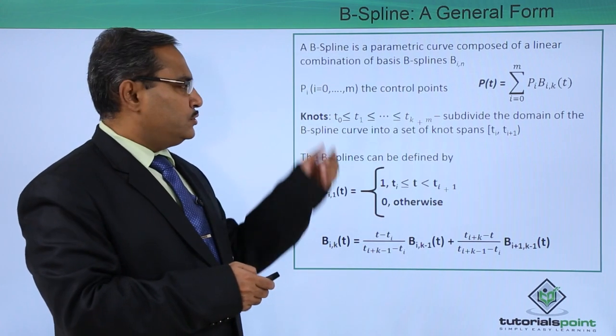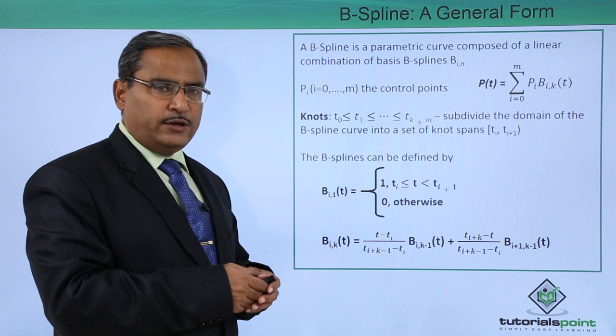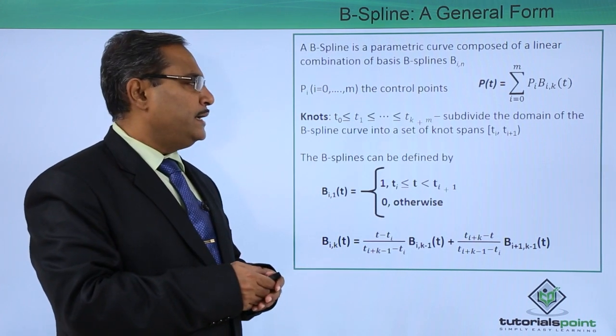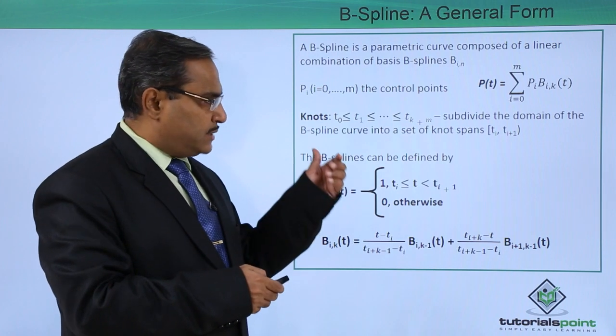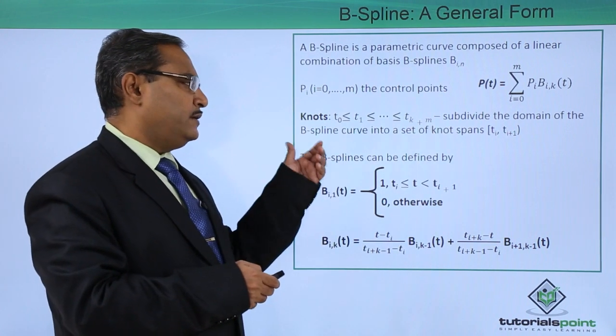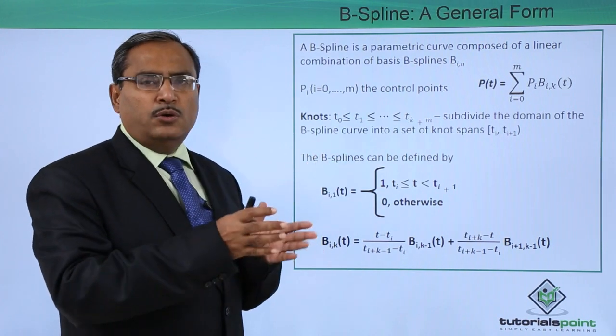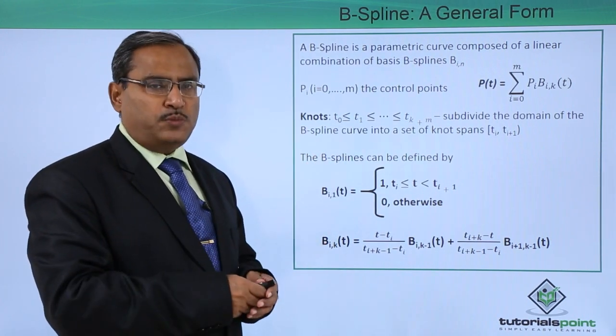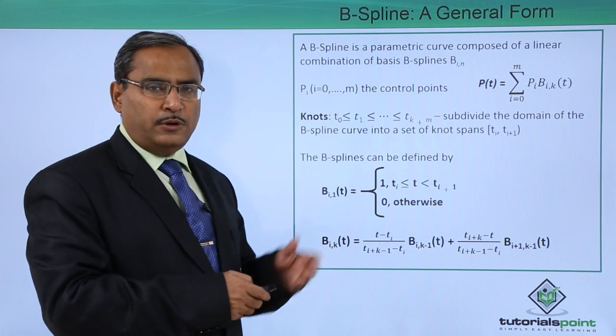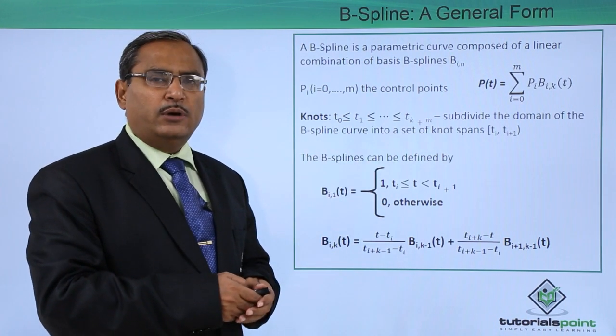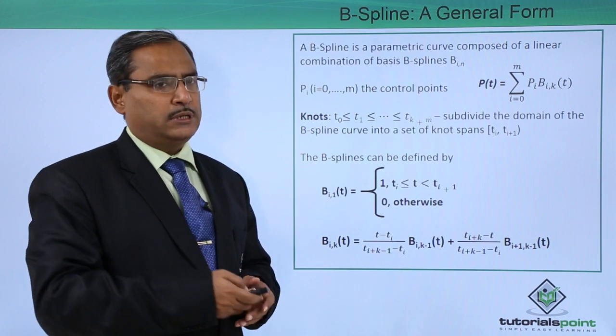Here we are having knots: T0 is less than or equal to T1 is less than or equal to dot dot dot, is less than or equal to TK plus m. These subdivide the domain of the B-spline curve into a set of knot spans ranging from TI to TI plus 1. If you increase these knots, you are going for more detailing about the curve.